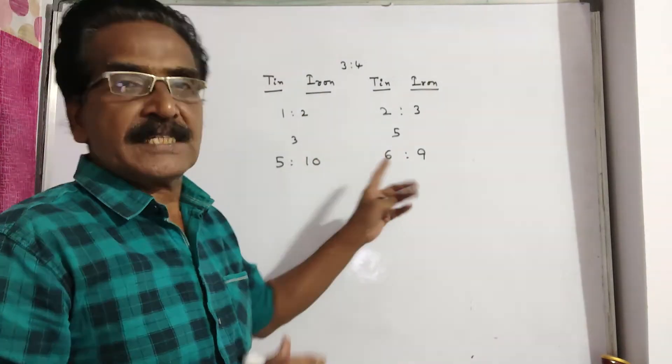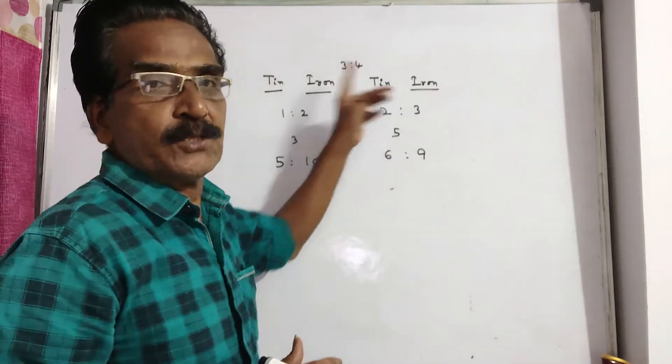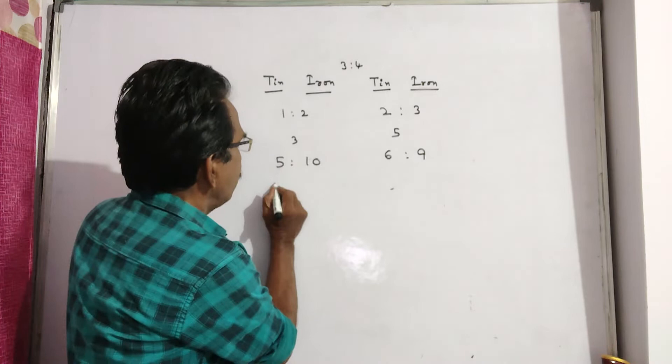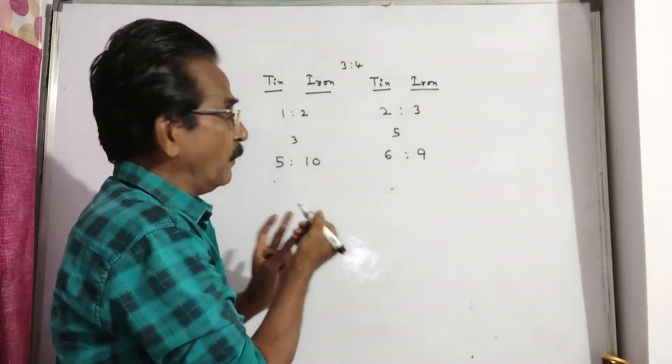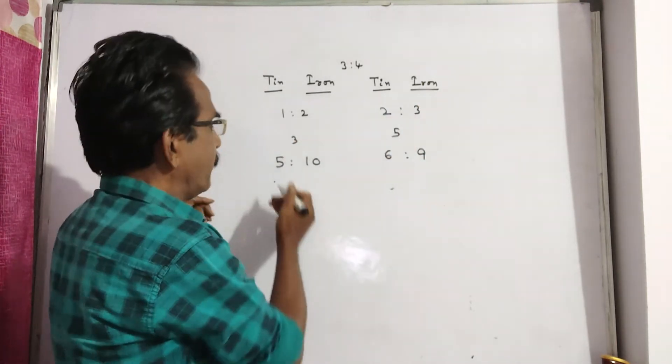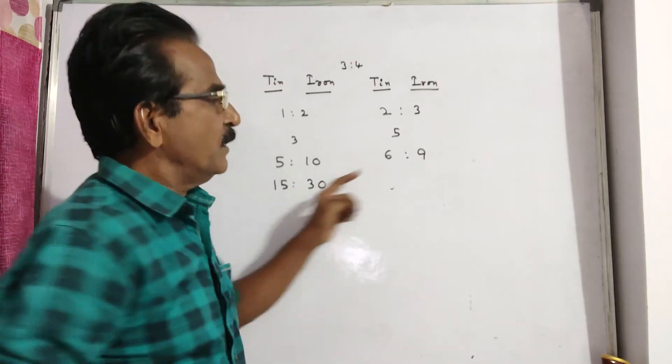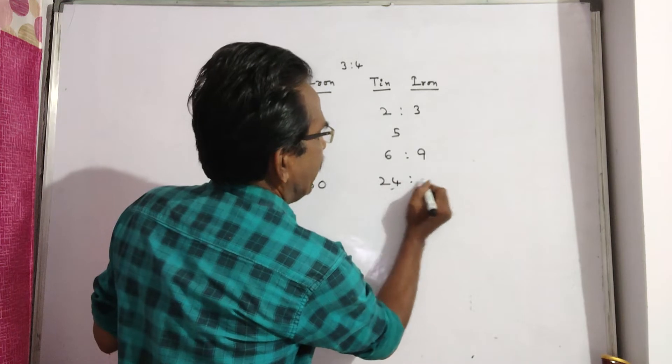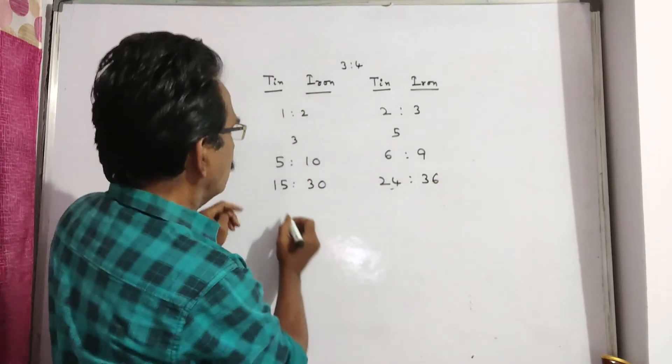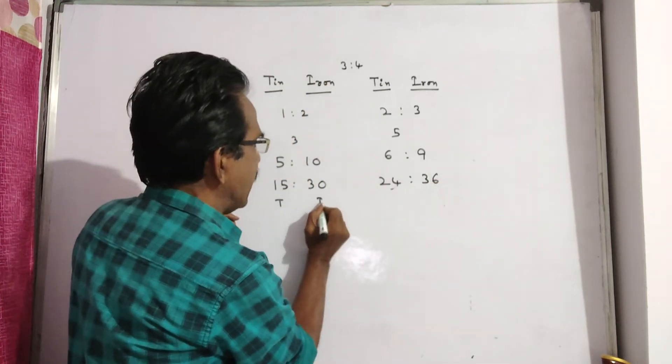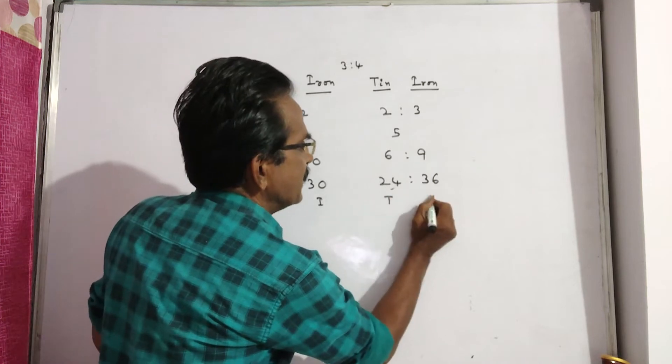Now this and this are taken in the ratio 3 is to 4. So 3 5s, this is taken in 3 parts, this is taken 4 parts. So 3 times 5 is 15, 3 times 10 is 30, 4 times 6 is 24, 4 times 9 is 36. Now this is tin, this is iron. This is tin, this is iron.